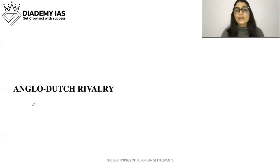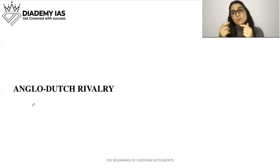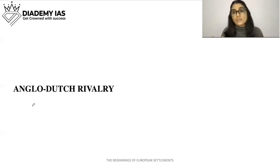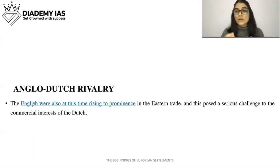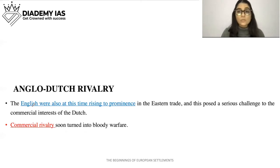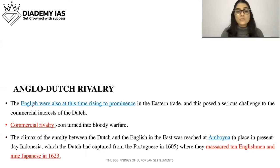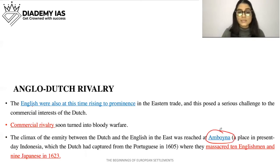Now, Anglo-Dutch rivalry. We have seen that the Dutch came, saw that trade was very profitable, and established themselves. But at the same time, the British also arrived and tried to establish themselves. Naturally, if two powers want to establish themselves in the same place with similar interests, rivalry will occur. The English were also rising at this time in eastern trade and this posed a serious challenge to Dutch commercial interests. Commercial rivalry soon turned into bloody warfare.